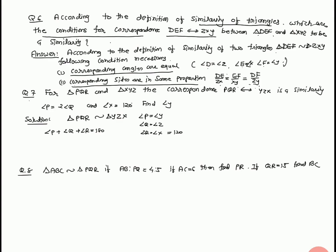Now question number 7: For triangle PQR and triangle XYZ, correspondence PQR to YZX is a similarity, and also given angle P equal to 2 angle Q, angle X equal to 120. Find angle Y. Now we start solution. Triangle PQR similar triangle YZX. Therefore angle P equal to angle Y, angle Q equal to angle Z, angle R equal to angle X. But angle X equal to 120, and angle P equal to 2 angle Q. So 2 angle Q plus angle Q plus 120 equal to 180, giving 3 angle Q equal to 60.